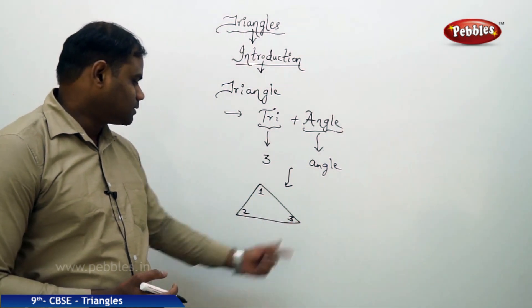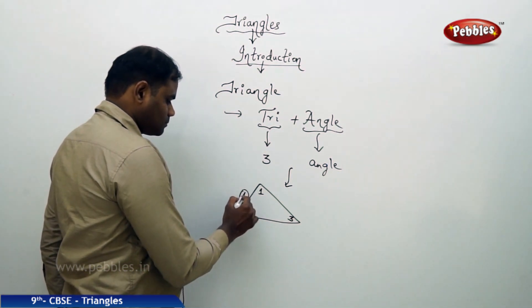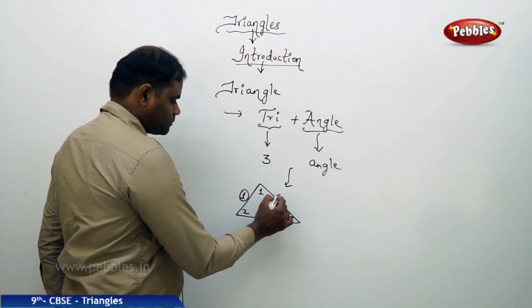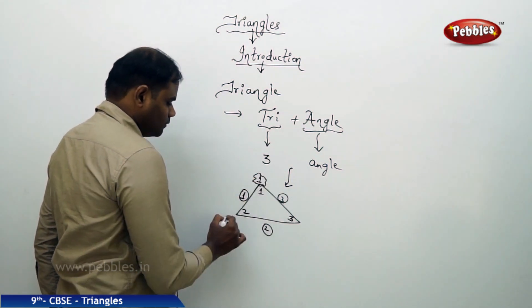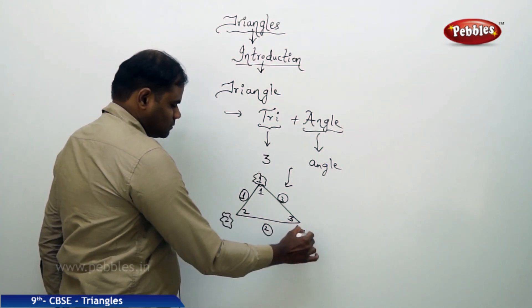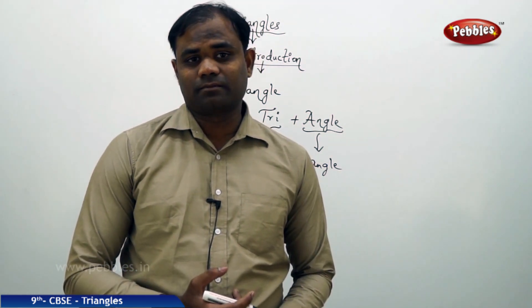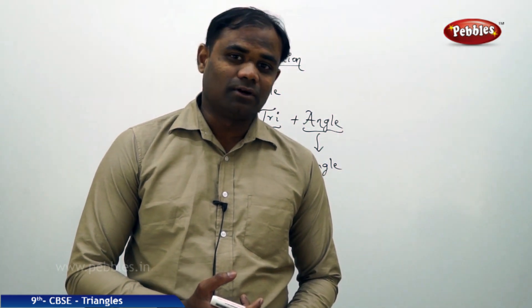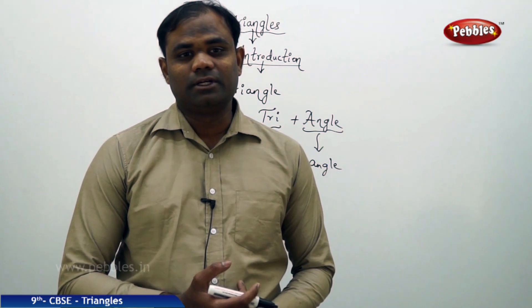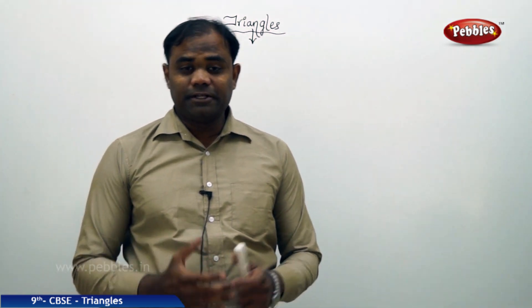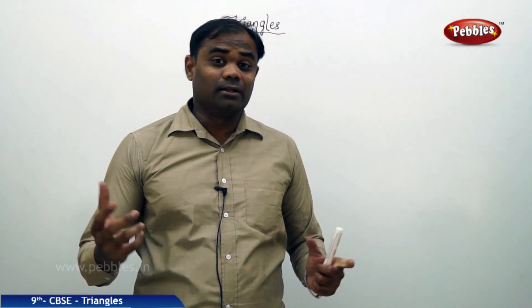So a triangle has three angles, three sides, and three vertices. The study of three angles of a geometrical figure is what we refer to as a triangle. Now that we have discussed the definition of a triangle and what it looks like, we move next to the properties involved with triangles. The first property is about congruency of triangles.